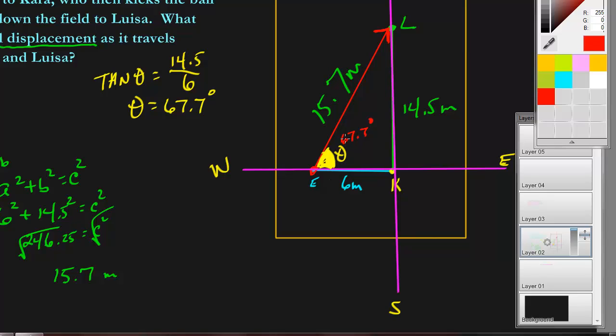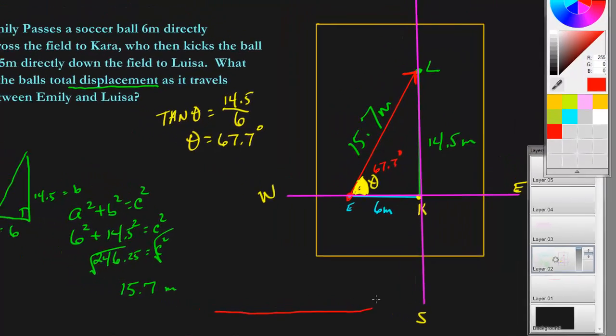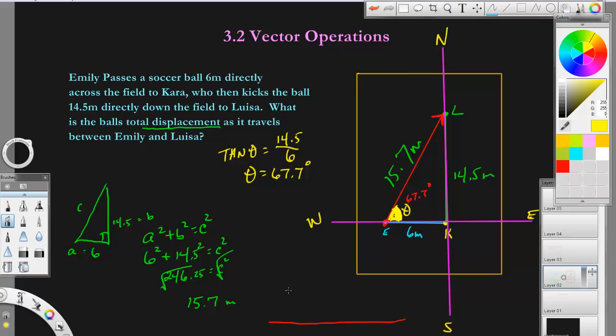All right, so our answer would be fifteen point seven meters at an angle of sixty seven point seven degrees. And by the way I typed in fourteen point six when I did that so it's like sixty seven point five. It should be but we're just going to go with this.